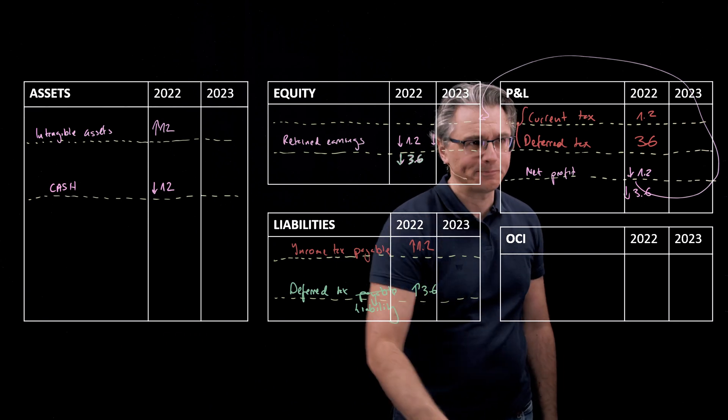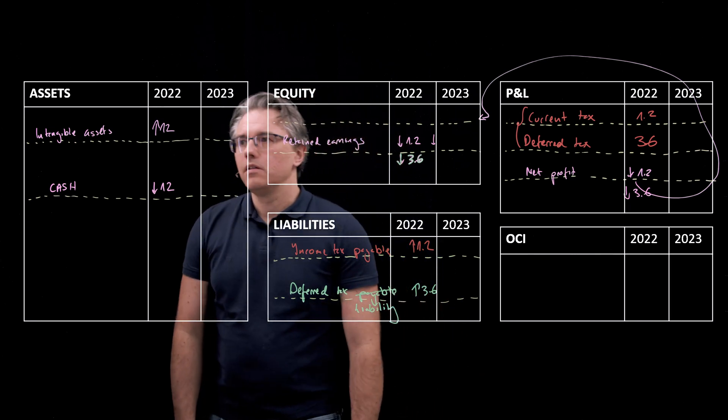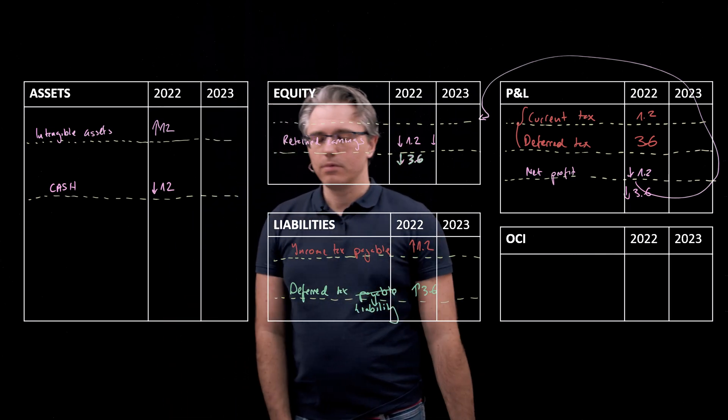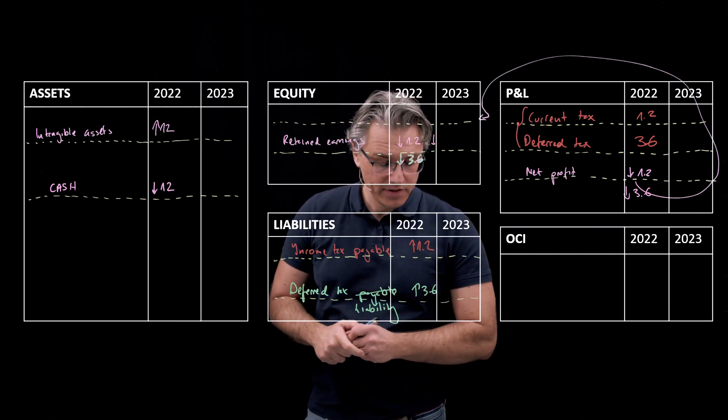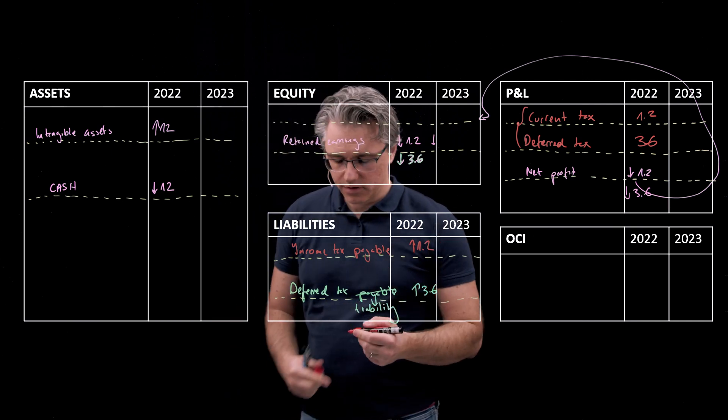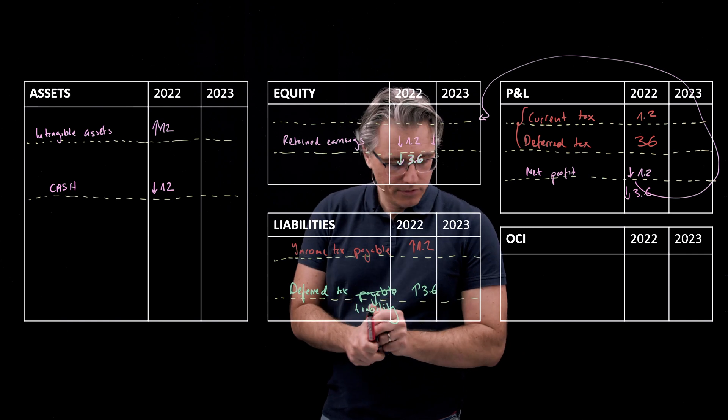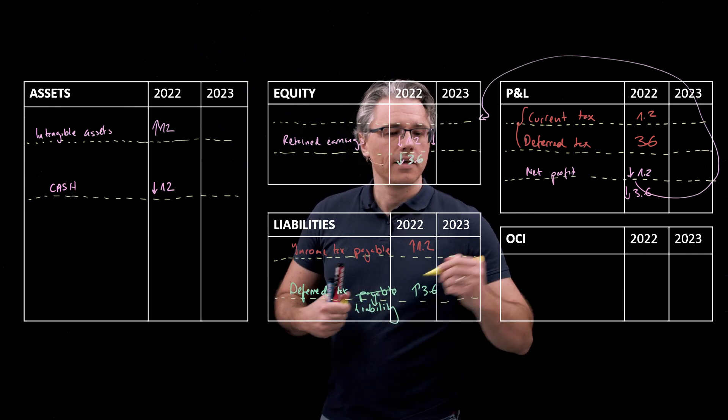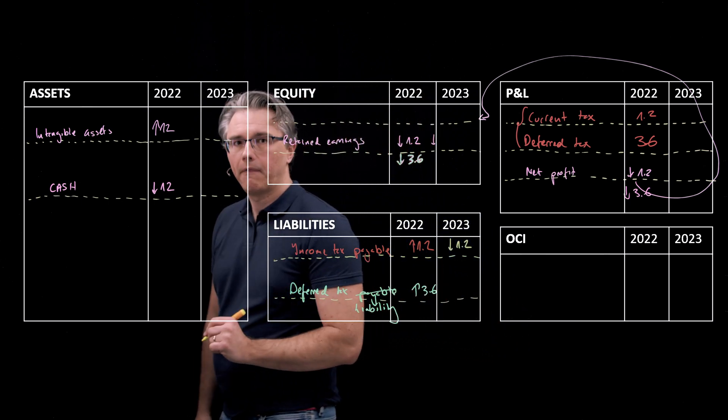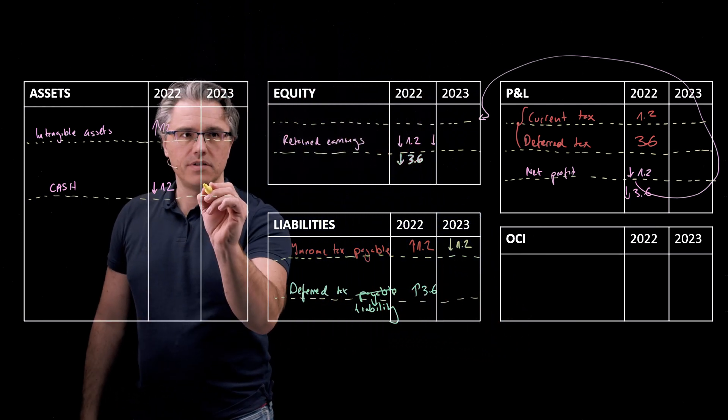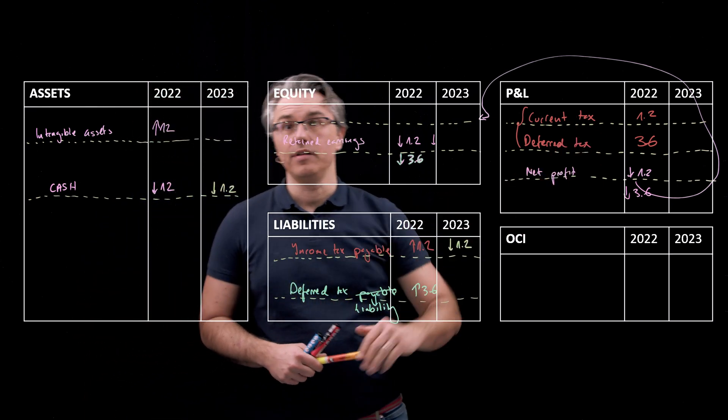Now, in the subsequent year, what will happen is the following. We will, for sure, probably have settled our income tax payable from the previous year. So let's just very quickly show that we paid this off, 1.2. And cash, therefore, disappears. That's a simple entry. It doesn't cause anything to happen in the income statement.